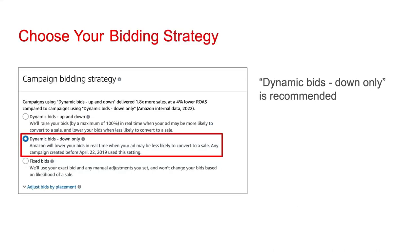You're then going to be asked about a bidding strategy. If somebody happens to be viewing your ad and Amazon recognizes a context that is not likely to lead to a sale, your bid for that user in that moment can be lowered, which will wind up saving you money if the user clicks on your ad and doesn't go on to make the purchase. The option 'dynamic bids down only' is a good choice here.